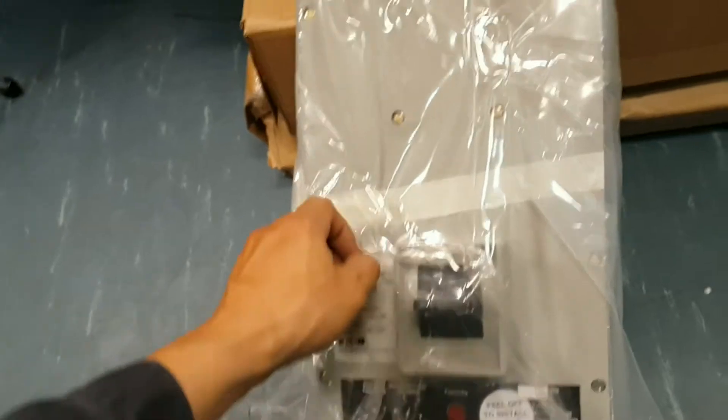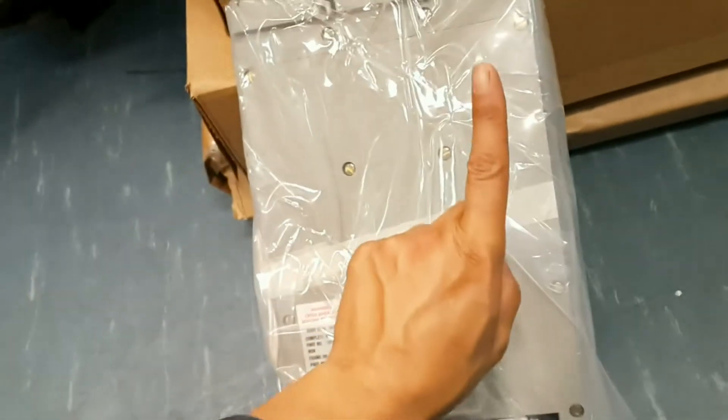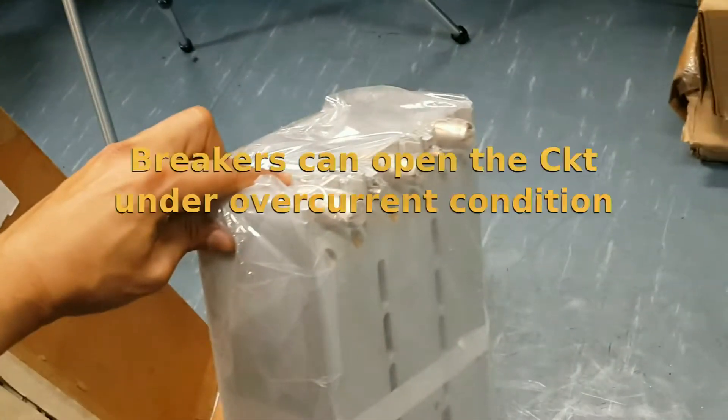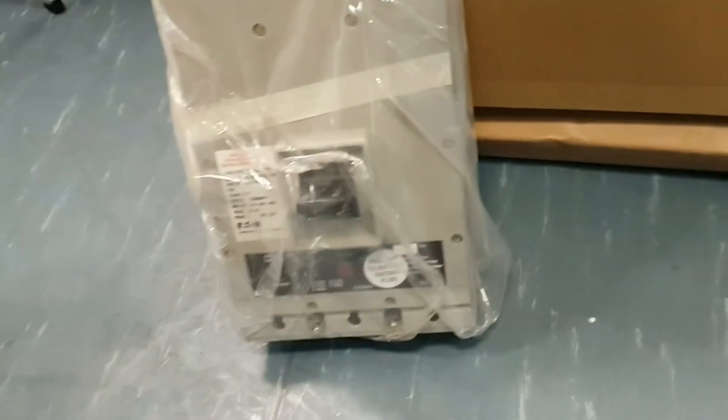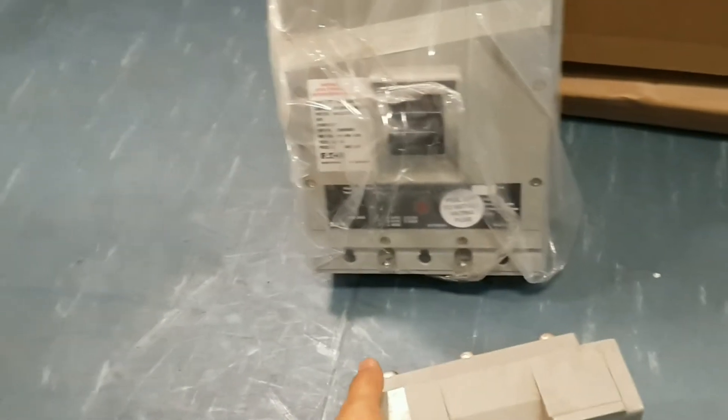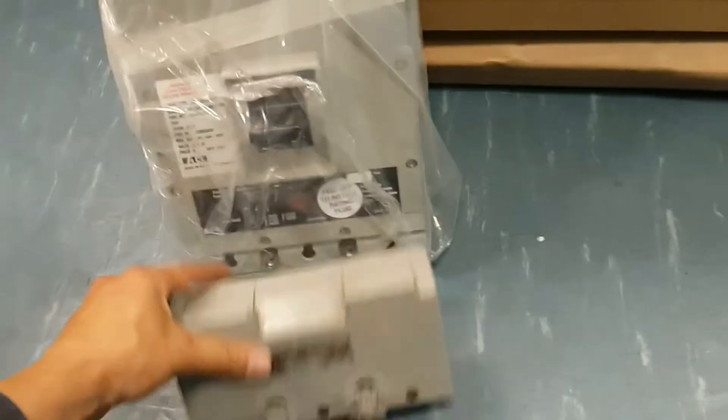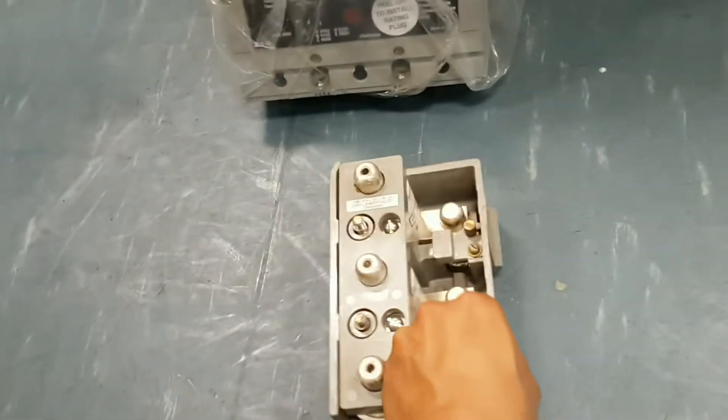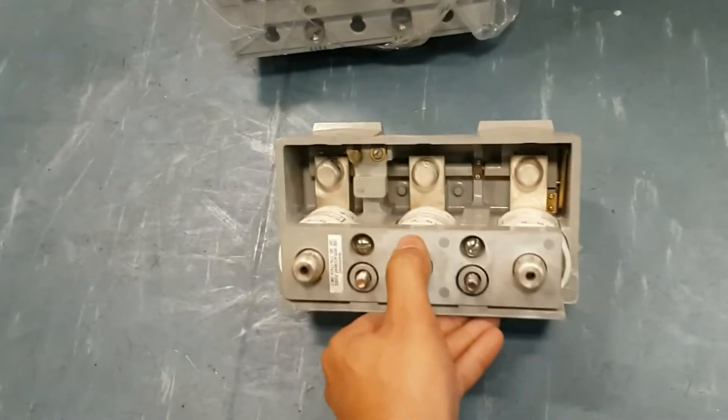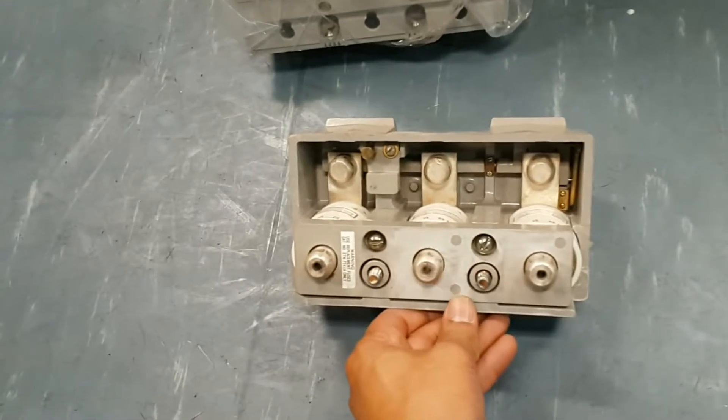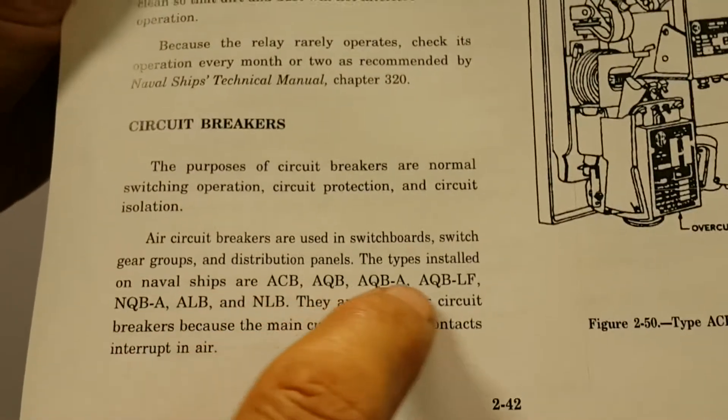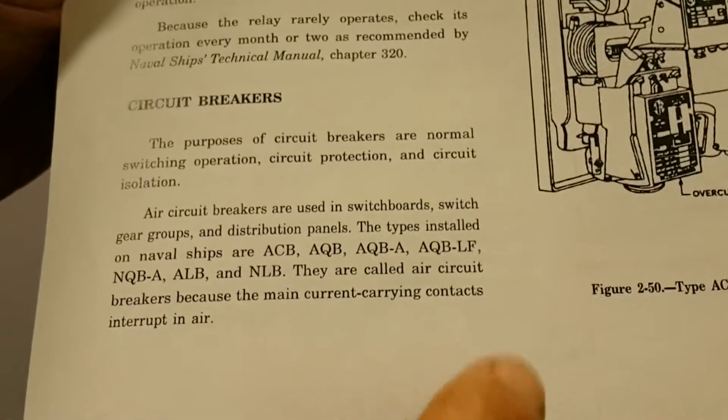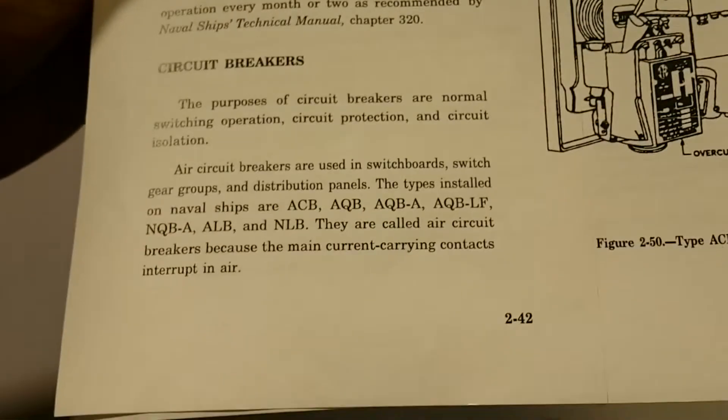Now, don't confuse them with household breakers. Household breakers are only for one phase, but shipboard breakers, the majority of them is going to be three phases. They have the ability to trip under over-current conditions. Some breakers, at the bottom, you can install what is called fuses. This is a breaker fuse, and they provide more protection to the load. To learn all about the different types of breakers that the Navy uses, I recommend reading chapter 2 of the Electrician's Mate book.